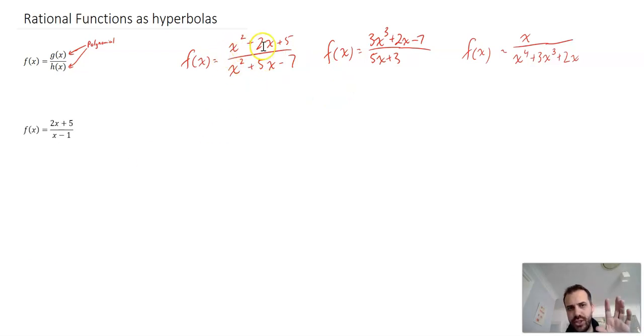This is a very broad range of functions. You can have any function over any function. They come in all sorts of different shapes, but I want to look at a very specific one: rational functions that sketch as hyperbolas. So we have one here, a specific example, f of x equals 2x plus 5 over x minus 1.